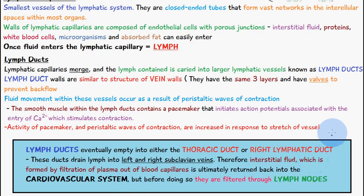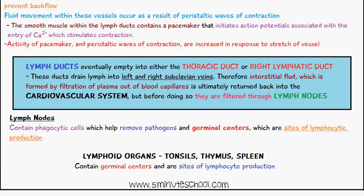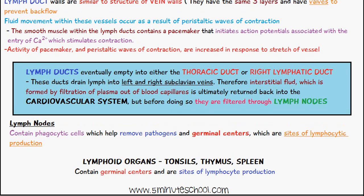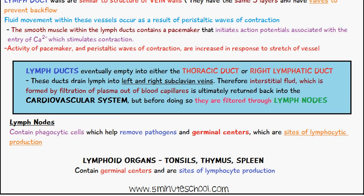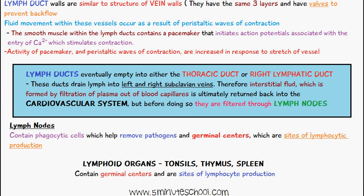Lymph nodes contain phagocytic cells which help remove pathogens, and they also contain germinal centers which are sites of lymphocyte production. The lymphoid organs — tonsils, the thymus and spleen — contain these germinal centers and are sites of lymphocyte production. The lymph nodes act as a sort of filter, helping to phagocytose microorganisms and clean up the lymph which was initially absorbed into the lymph vessels.